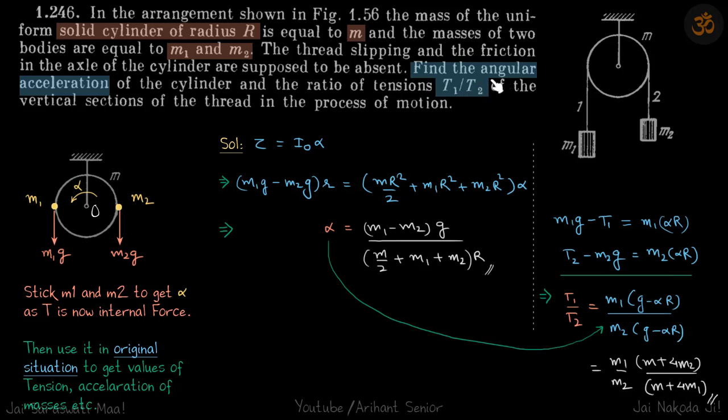Now the ratio t1 by t2. As discussed, m1g minus t1 equals m1 alpha r, and t2 minus m2g equals m2 alpha r. From here, you just do t1 by t2, you will get the answer in terms of alpha. Put the value of alpha and you will get your answer.